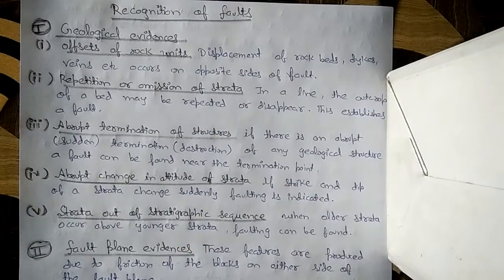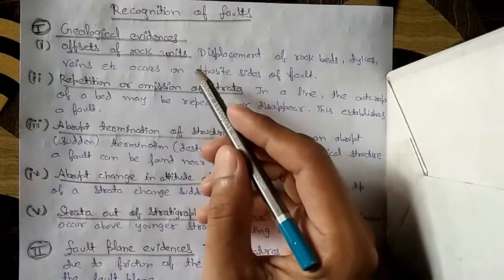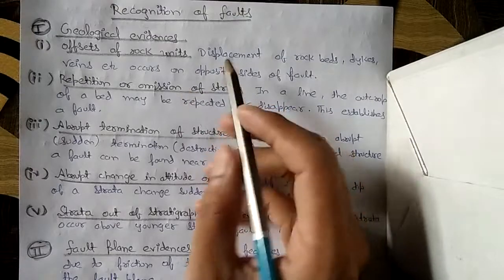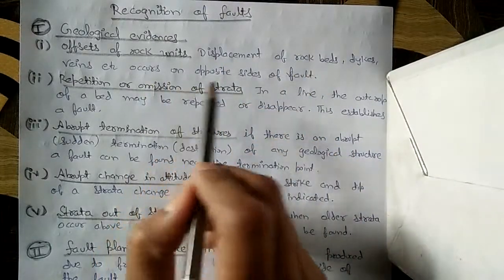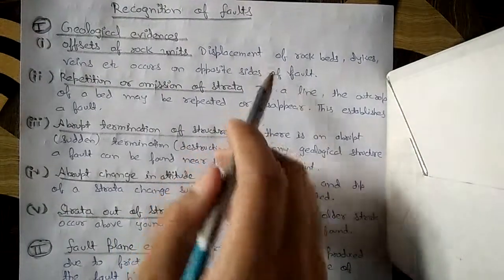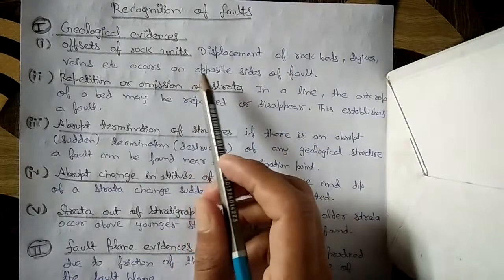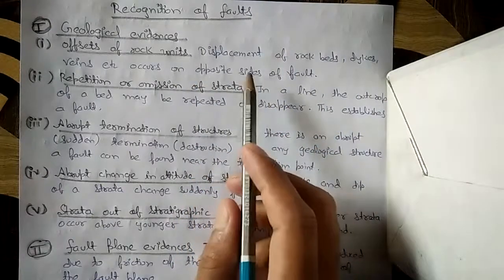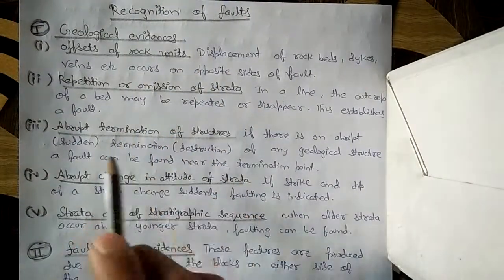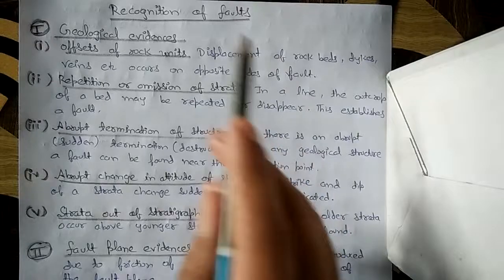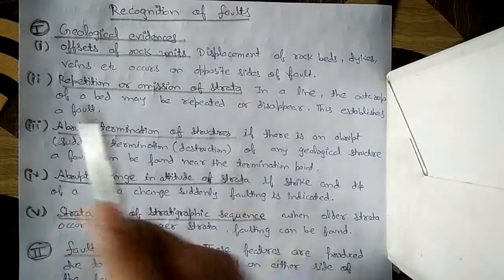Under geological evidences, the first type is offsets of rock units. Displacement of rock beds, dykes, veins, etc., occurs on opposite sides of the fault. This displacement of rock beds occurring on opposite sides of the fault is called offsets of rock units. If such a structure is found, a fault will definitely be present.